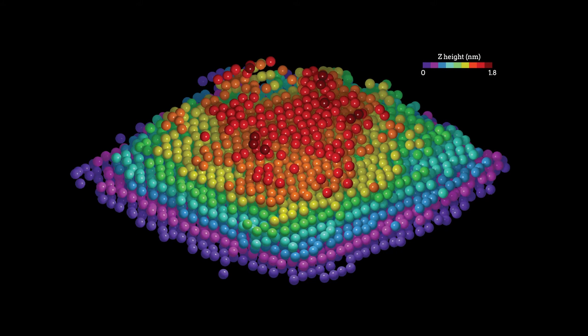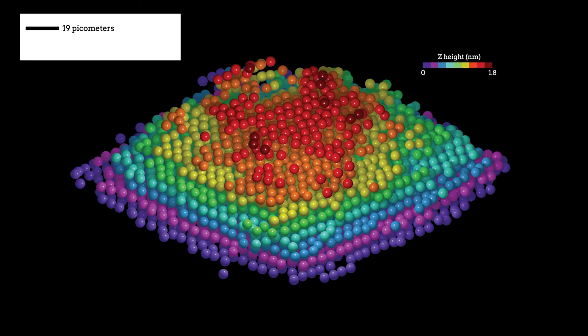Statistical analysis showed that the 3D positions of atoms could be determined with a precision of 19 picometers, much smaller than a hydrogen atom's radius of 53 picometers.